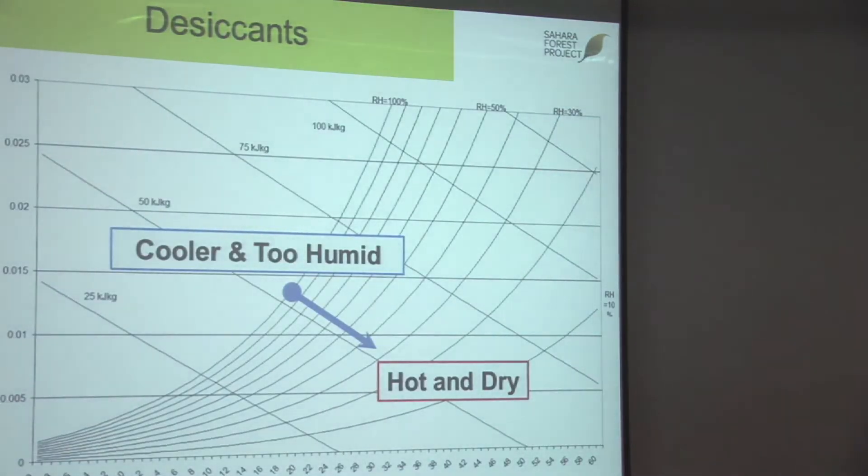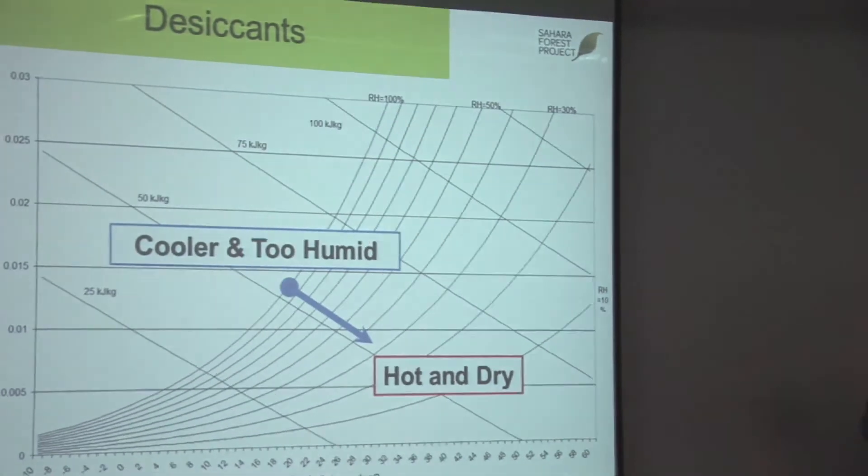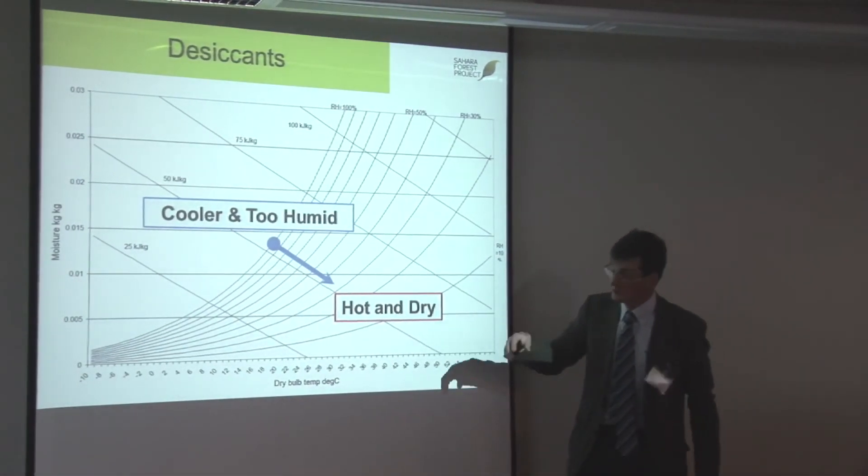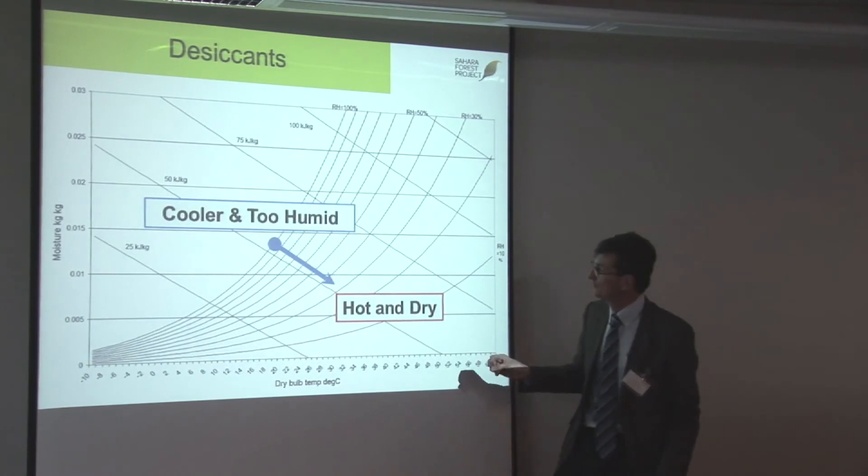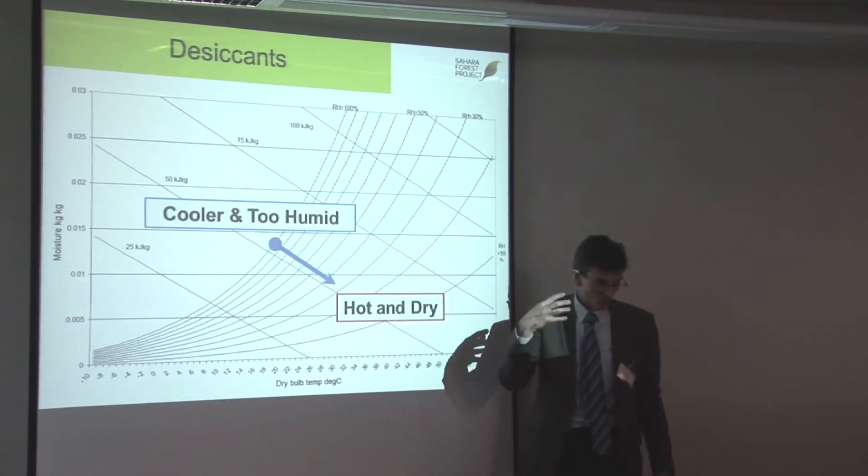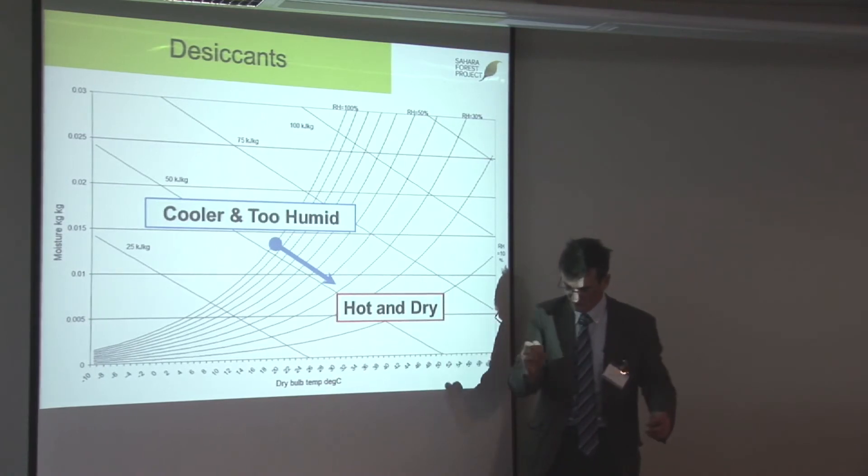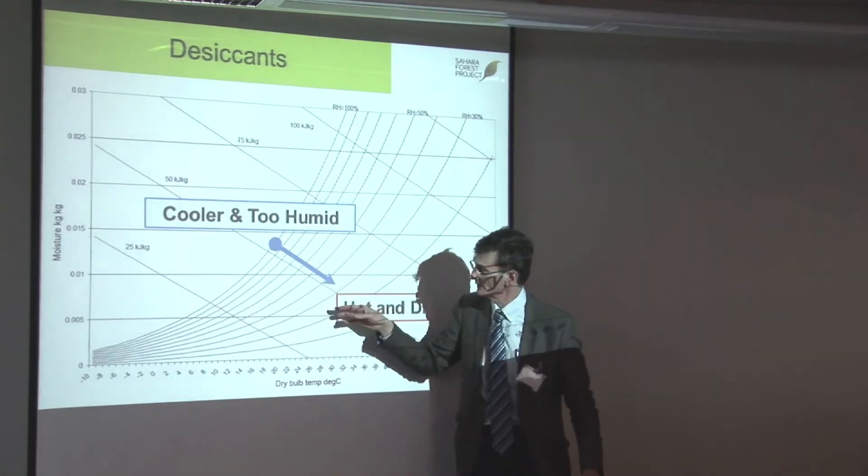We're using that bitterns to turn the tables on this process of humidification. The bitterns is a desiccant. If you run air over a pad that's got desiccant in it, it goes the other way.